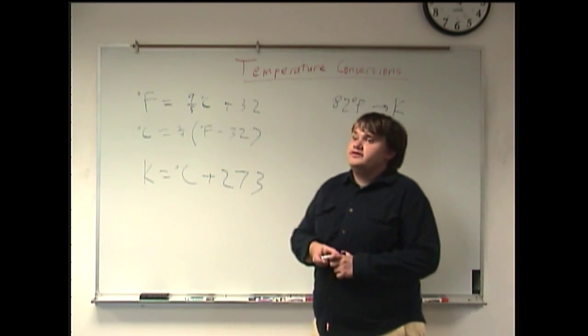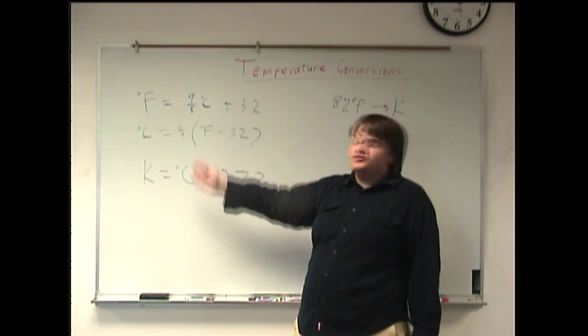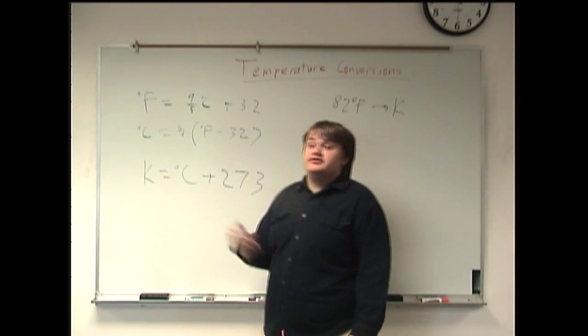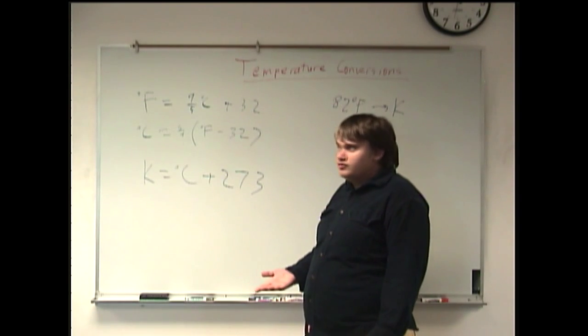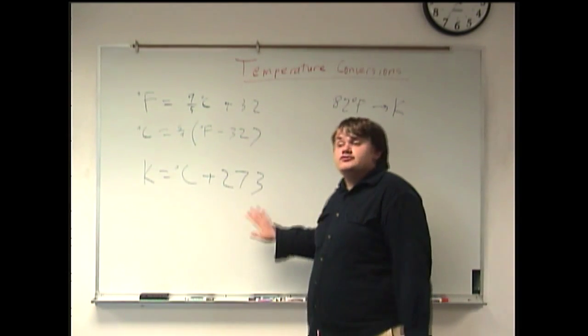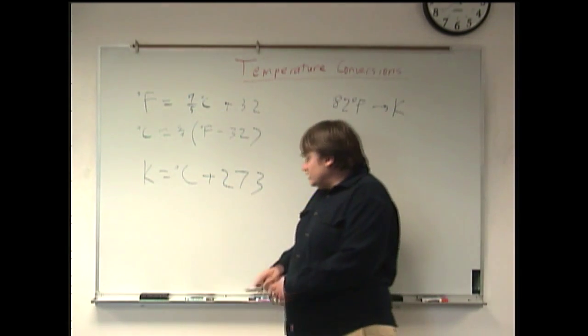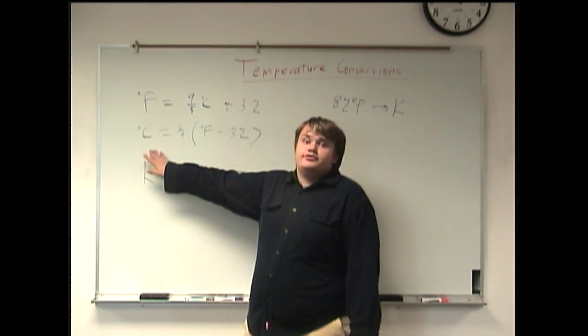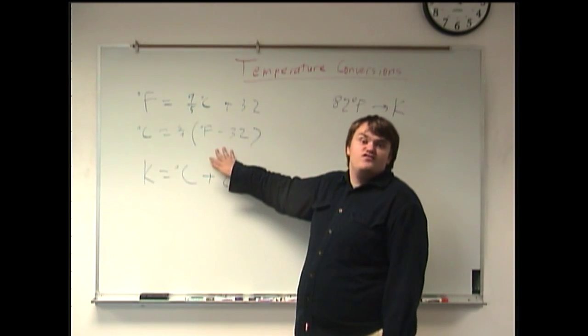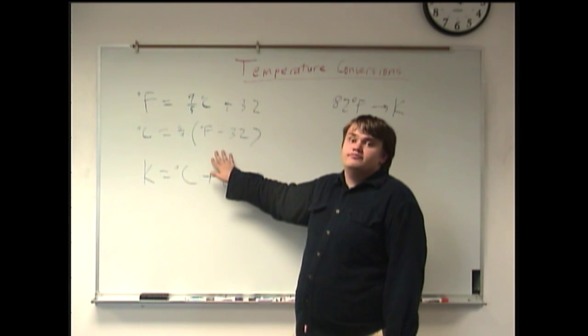Now, I know what you're thinking—but wait a minute, there's no conversion rate from Fahrenheit to Kelvins. Well, no. But notice that to get Kelvins, you add 273 to Celsius temperature. And to get Celsius temperature, you need to use the formula that involves the Fahrenheit temperature.